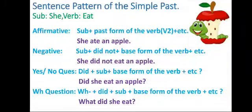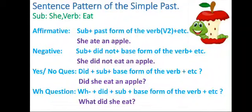Now the negative sentence. Subject: she. We use 'did not' — 'did' is the past form of the verb 'do,' used as the helping verb. Did not plus the base form of the verb plus etc. So: she did not eat an apple. We can never say 'she did not ate an apple.' It must be: she did not eat an apple.